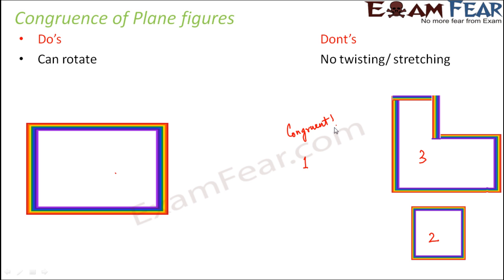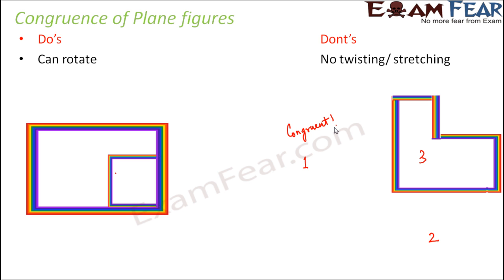Let's look at figure number 2. If you consider figure number 2, does it matter whichever way you try to rotate it — do you think figure number 2 will ever be able to cover the given figure completely? No, never. Because when you look at the size of figure number 2, it is very small compared to the given figure and therefore they will not be congruent. However, if stretching were allowed, I could stretch this figure to make it congruent. But stretching is not allowed, so this figure will not be congruent to the given figure because it has a different size.